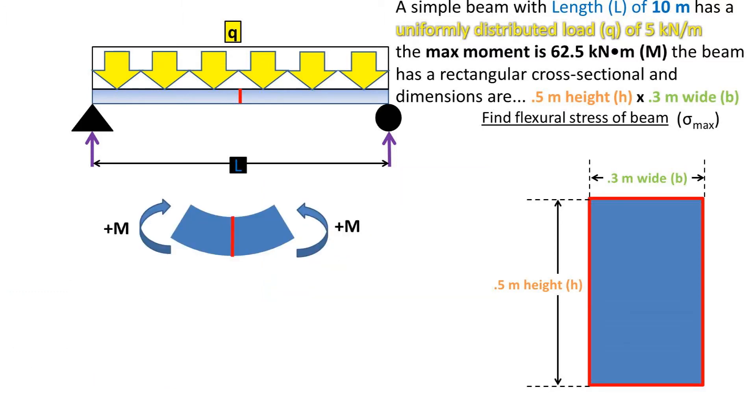So we have a load acting downwards on the beam, so the beam will be deflected downwards as pictured, with two moments counteracting each other as depicted. This case is denoted with positive moments. The moments counteract each other because there is no movement, so the moments must cancel each other out.